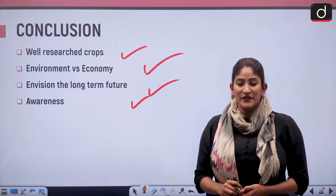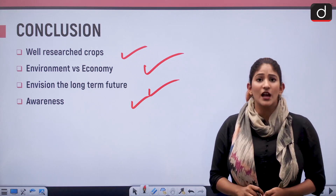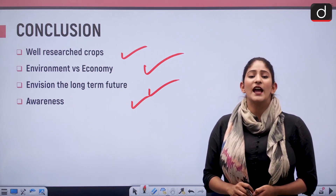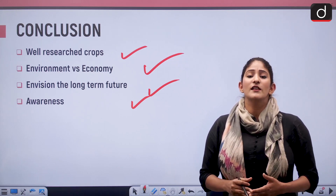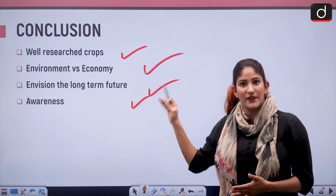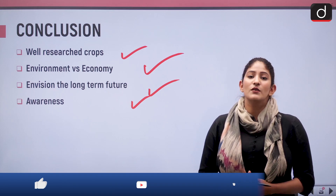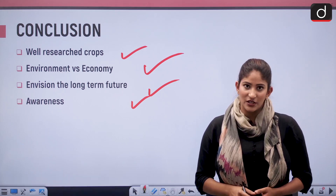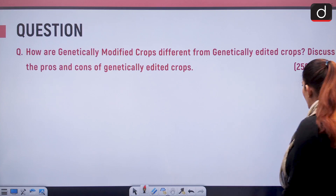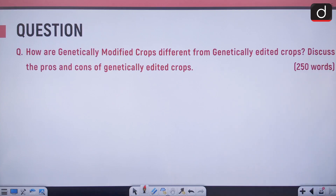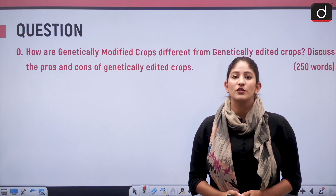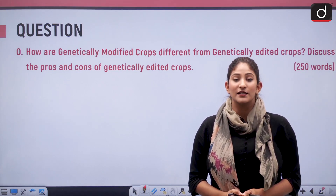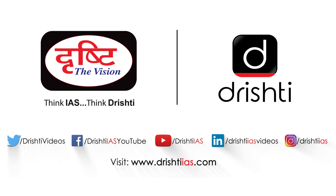Countries such as Argentina, USA, Canada, and Israel have very easy notification rules with respect to genetically edited crops, and India has learned from their experience. The final outcome will be based on the rollout. The mains-based question to practice is: How are genetically modified crops different from genetically edited crops? Discuss the pros and cons of genetically edited crops in 250 words. That's it for today. Tomorrow we shall meet again with another segment. Stay updated and thank you for watching.